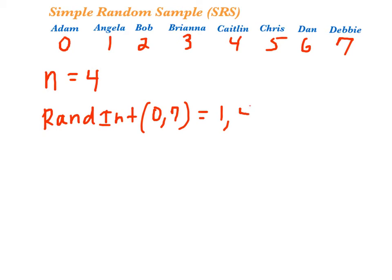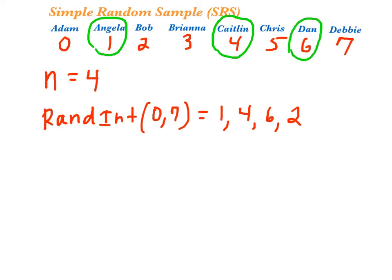I get 1, 4, 6, 2. Those numbers correspond to the people who will be in our sample. So we'll have Angela — she's number 1 — Caitlin is number 4, Dan is number 6, and Bob is number 2. That's a simple way to do a simple random sample.